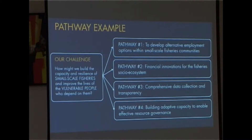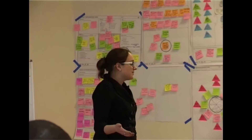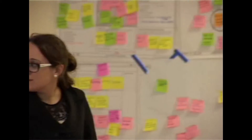Some of the pathways we figured out are: number one, how can we develop alternative employment options within small-scale fisheries communities? How can we develop financial innovations for the fisheries social ecosystem? How can we deal with data collection and transparency? One of the biggest key issues was that fishers can't actually get the right price for their fish — part of the problem is that there isn't actually a market, and it's unclear what the value of fish is and how you track it down the value chain. Pathway number four is building adaptive capacity to enable effective resource governance.